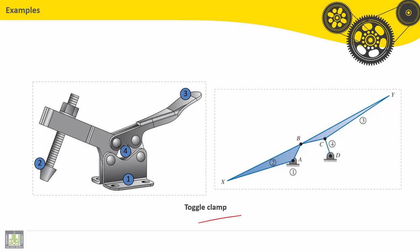Another example, toggle clamp. It is very complicated here to make this drawing, but it is very simple and easy and fast to make this kinematic diagram.